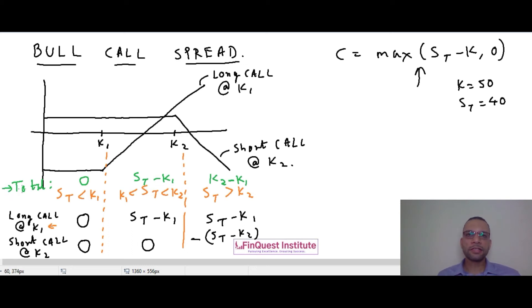Here we have taken a simplified assumption that there are no transaction costs or brokerages involved to keep the equation simple because we are trying to understand the logic first. Subsequently you can make adjustments to these payoff conditions to take into consideration the transaction costs and charges which are involved.